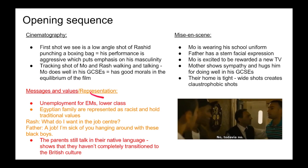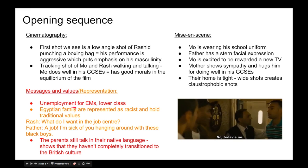Some messages, values, and representation: there is a lot of unemployment for ethnic minorities and the lower class, as Rash complains about being unemployed and sounds like he doesn't want a job. The Egyptian family are also presented as racist and holding traditional values — the father whispers in front of Rash and his black friend, 'I'm sick of you hanging around with these black boys.' The parents still talk in their native language, showing they haven't completely transitioned to British culture and still hold traditional values. This is also why they can't accept Rash for being gay, as many in British culture accept homosexuality but they do not, due to their traditional background.